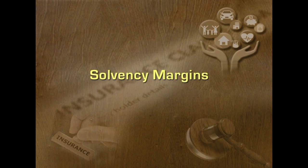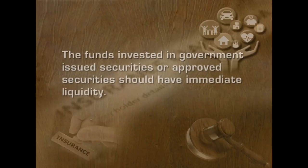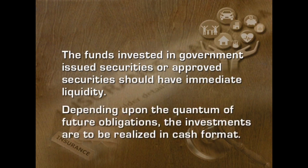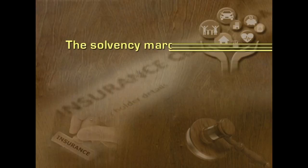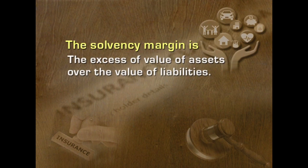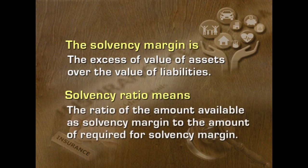The insurance company which sold insurance policies should have funds or assets to honor future claims and maturing obligations. The funds invested in government issued securities or approved securities should have immediate liquidity depending upon the quantum of future obligations, and the investments are to be realized in cash format. The Insurance Act 1938 has provisions related to the solvency margins. The solvency margin is the excess of value of assets over the value of liabilities, and the solvency ratio means the ratio of the amount available as solvency margin to the amount required for solvency margin.